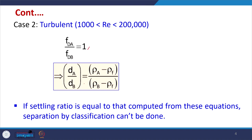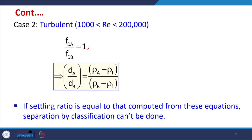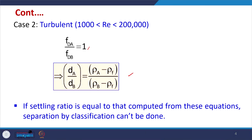In the turbulent case the relationship is direct rather than under a square root, so the relationship is slightly different from the laminar case. If the settling ratio is exactly equal to the compound from these equations — meaning both particles have the same settling ratio — separation by classification cannot be done. If they are exactly the same, separation may not be possible.